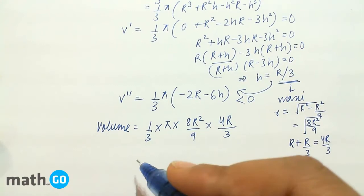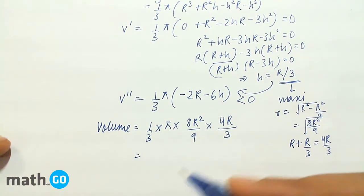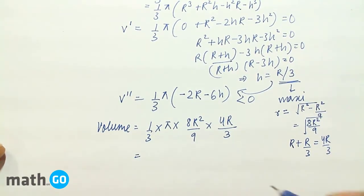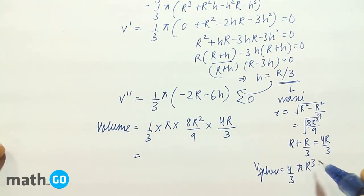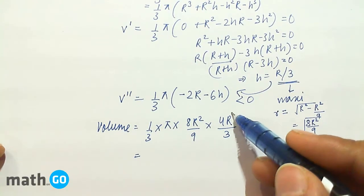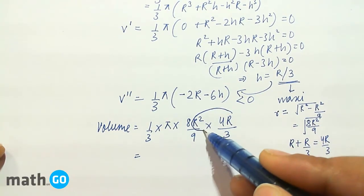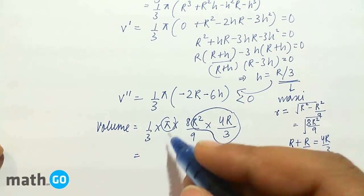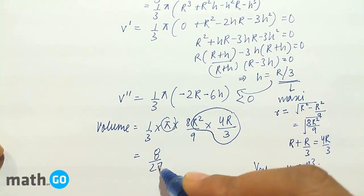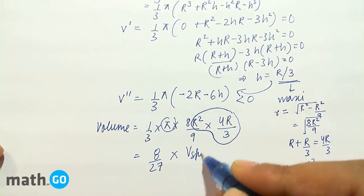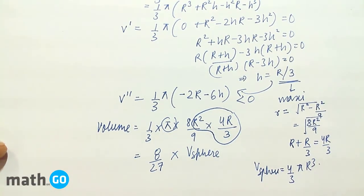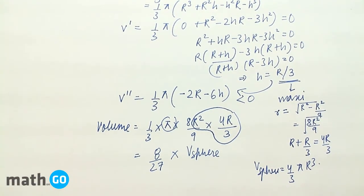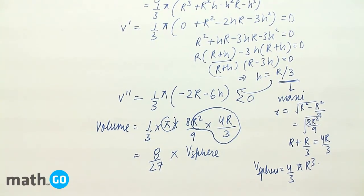Now the volume of the sphere is 4/3 π R³. So if we take 4/3 π R³ out, we will be left with 8/27 into volume of sphere. This is what we have to prove, that the volume of the largest cone that can be inscribed is 8/27 the volume of the sphere.